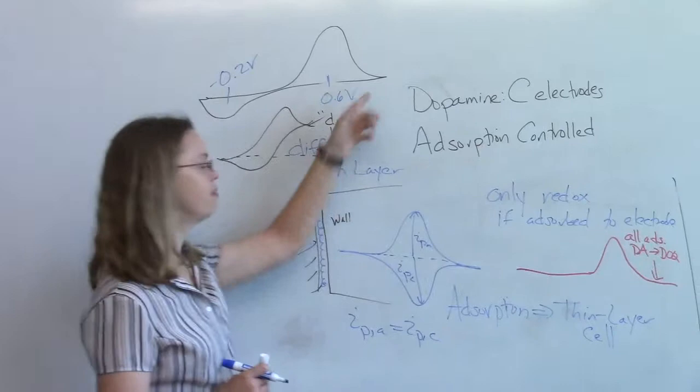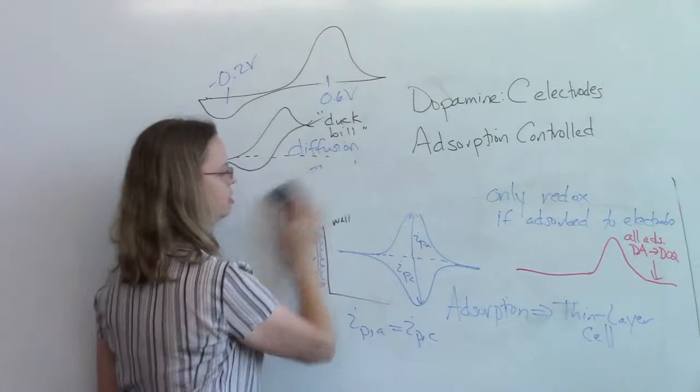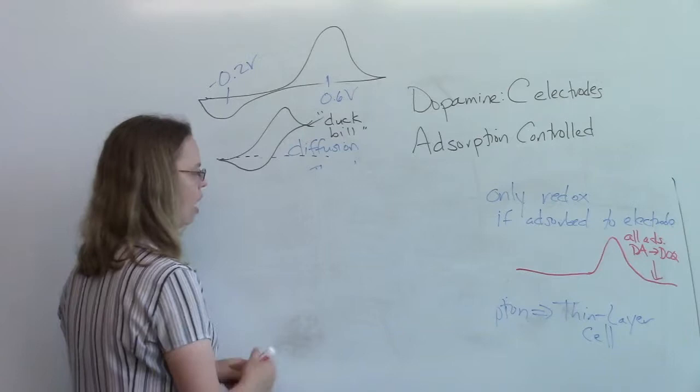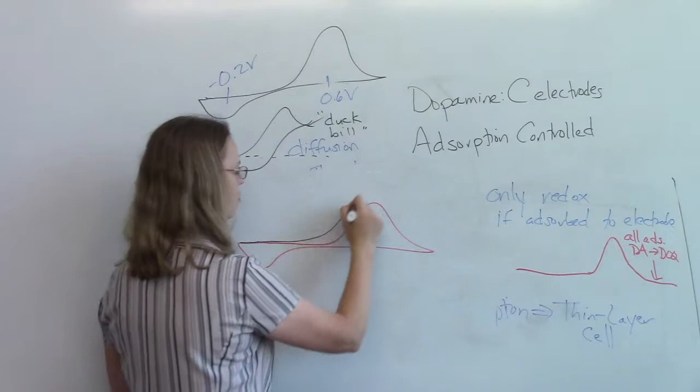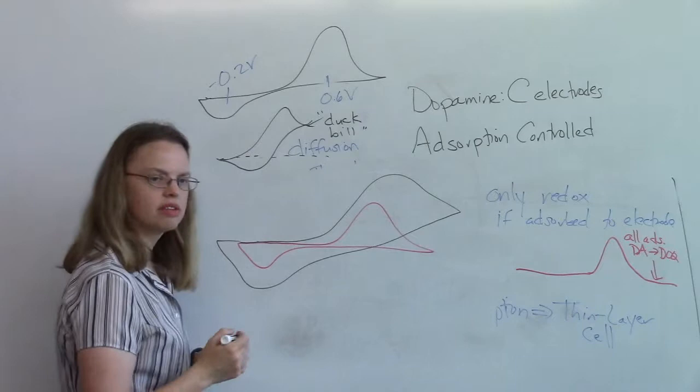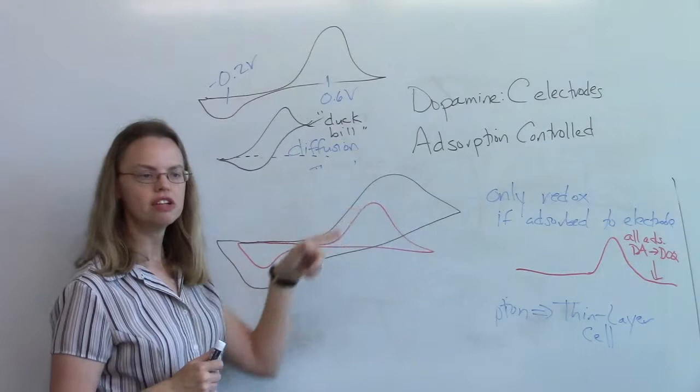And so it turns out low concentrations, we see this characteristic shape that I've been talking about. However, if you did go to a higher concentration, a low concentration of dopamine might look something like this. But if you went to a higher concentration of dopamine, even with FSCV, you might start to see it look like that.